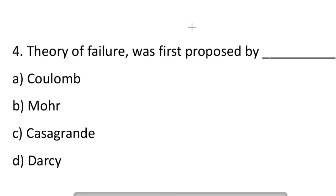Next question: theory of failure was first proposed by. Option A: Coulomb. Option B: Moore. Option C: Casagrande. Option D: Darcy. So the answer is Coulomb.